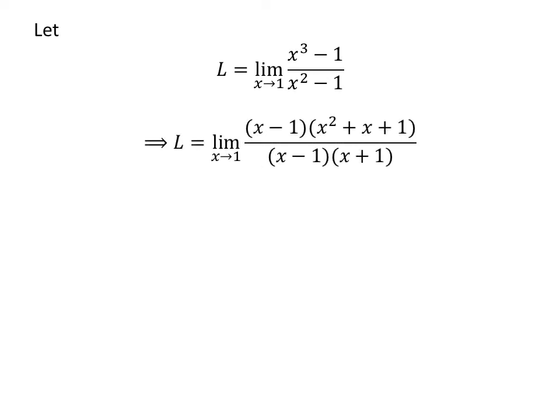x cubed minus 1 can be factorized as (x minus 1) times (x squared plus x plus 1), and x squared minus 1 as (x minus 1) times (x plus 1).